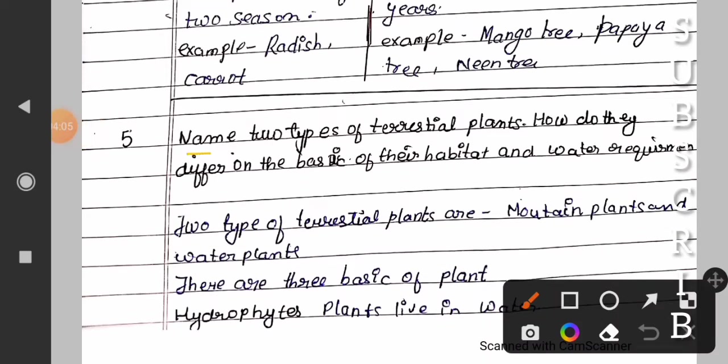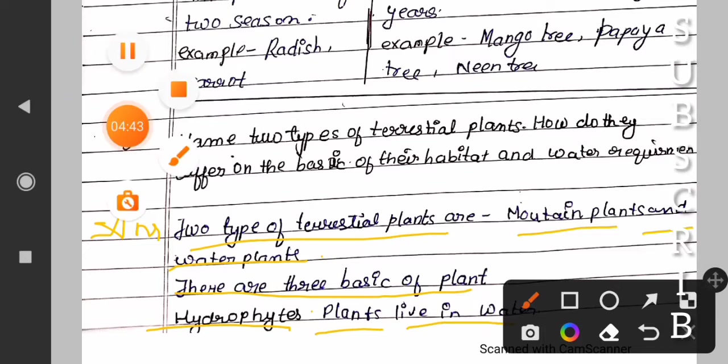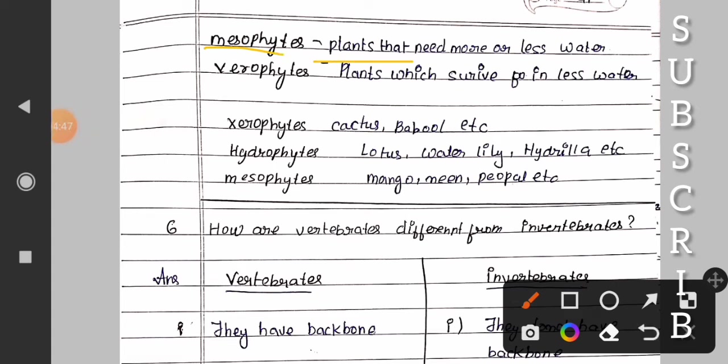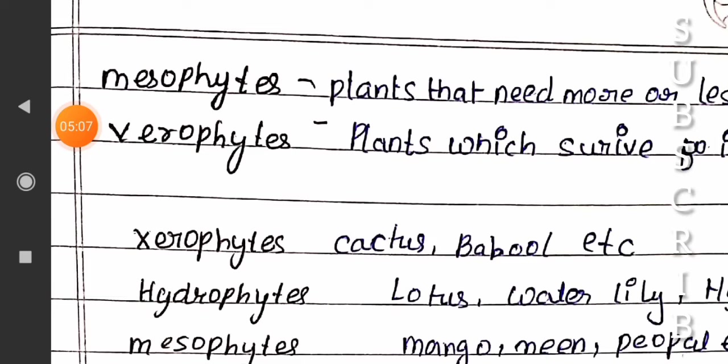Name two types of terrestrial plants. How do they differ on the basis of their habitat and water requirement? Answer: Two types of terrestrial plants are mountain plants and desert plants. There are three types of plants. Hydrophytes: Plants live in water. Mesophytes: Plants that need more or less water. Xerophytes: Plants that survive in less water. Example: cactus, babool, etc.